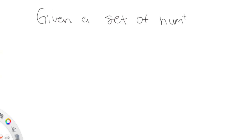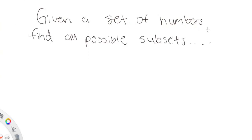So let's actually do a problem: given a set of numbers, find all possible subsets. We're going to brute force this using bit masks. What do I mean by a subset? Let's say I'm given the set of numbers one, two, and three. I want you to brute force and give me all possible subsets.